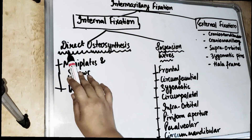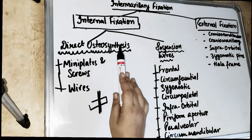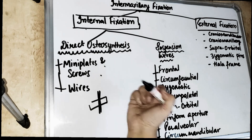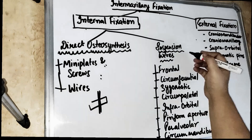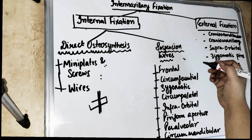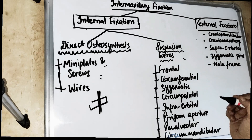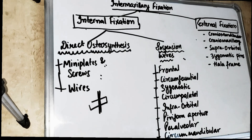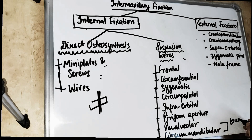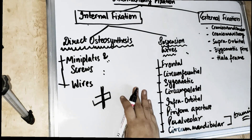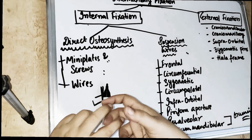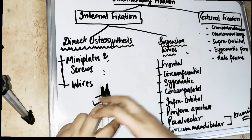Internal fixation can happen in two ways. One is direct osteosynthesis, which includes mini plates and screws. The other type involves suspension wires. Suspension wires include frontal, circumferential, zygomatic, circumpalatal, infraorbital, piriform aperture, peralveolar, and circummandibular wiring — which we have already covered in the gunning splint demonstration. Wire suspension basically means a wire is suspended from the maxilla to a fixed point, for example in mid-facial fractures.